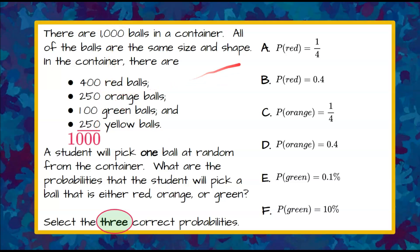Now we're going to look at choice A. What's the probability of getting red? Noticing that B is also the probability of getting red. There are 400 red balls in the container of 1,000.